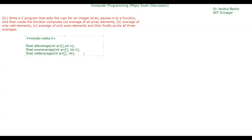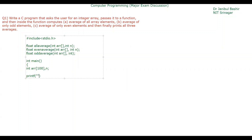Now let me write the main program. The first part of the question asks us to write a C program that asks the user for an integer array. So we declare the array — you can name it anything — and let's keep the size as 100. We also declare a variable N. Only 100 elements are allowed in the array.